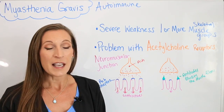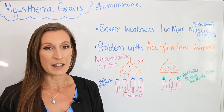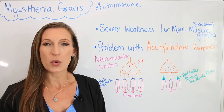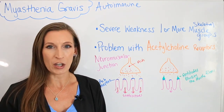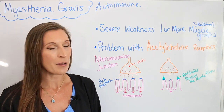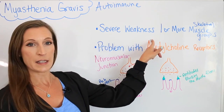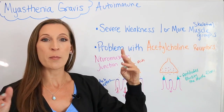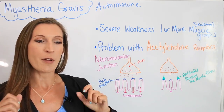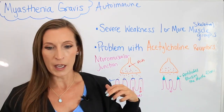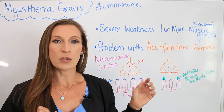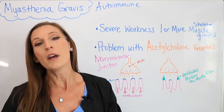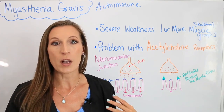Myasthenia gravis is an autoimmune disease. When you say autoimmune, that means the body is attacking itself, so we're going to have antibodies playing a role here. We have severe weakness of one or more skeletal muscle groups. Maybe an arm or a leg is not quite working — it's not necessarily bilateral, just random places in the body where the muscles aren't working.